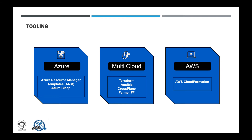Now let's jump into the tooling part. There are many choices available to do infrastructure as a code, but each of them has limitations related to some cloud provider or features. For the Microsoft Azure cloud platform, we have two built-in ways with Azure DevOps and CLIs: ARM templates, which are essentially JSON files — easy to deploy but difficult to manage, read, and recycle — and for this purpose Microsoft introduced Azure Bicep, which is the next generation of ARM templates, a domain-specific language for deploying Azure resources declaratively.